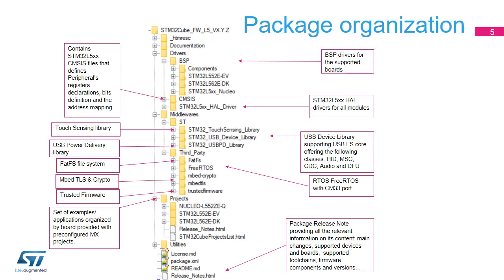The documentation folder contains the STM32CubeL5 getting started document, helping developers quickly become familiar with the firmware package and its contents. The drivers folder contains all ST-developed drivers. CMSIS contains files defining STM32L5xx-supported devices, peripheral registers declarations, their associated bit definitions, and address mapping. The STM32L5xx HAL driver folder contains the drivers for all peripherals. The drivers for all supported boards are found in the BSP folder. The middleware folder contains supported middleware libraries and stacks provided either by ST or third parties.